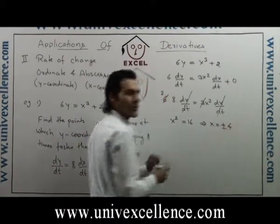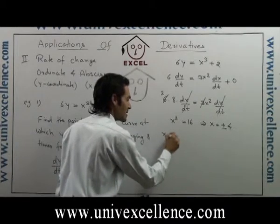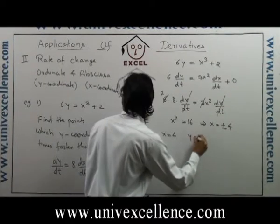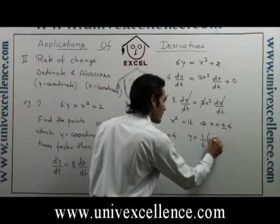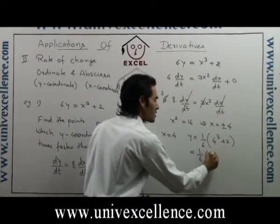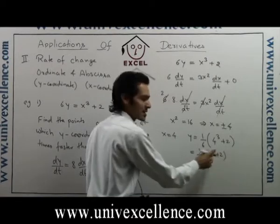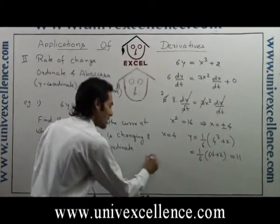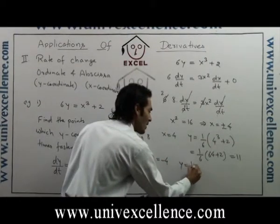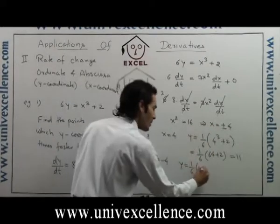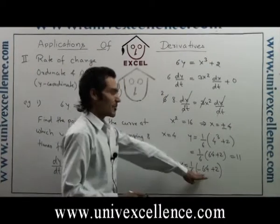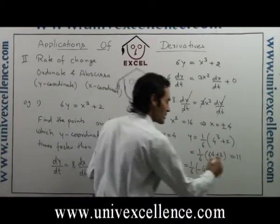When x = 4: y = (1/6)(4³ + 2) = (1/6)(64 + 2) = 66/6 = 11. When x = −4: y = (1/6)(−64 + 2) = −62/6 = −31/3.